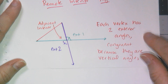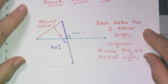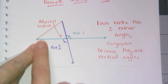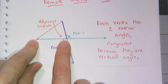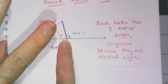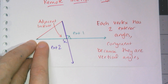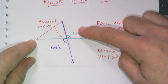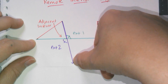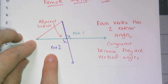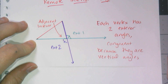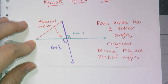Each vertex of a triangle has two exterior angles. If I extend one side length out, this creates exterior angle one. If I extend the other side length out, it creates exterior angle two. And these two angles have to be congruent because they're vertical angles.